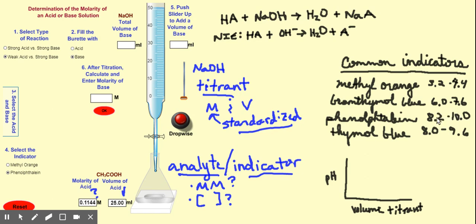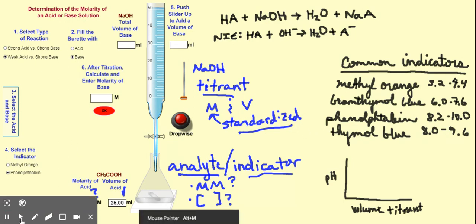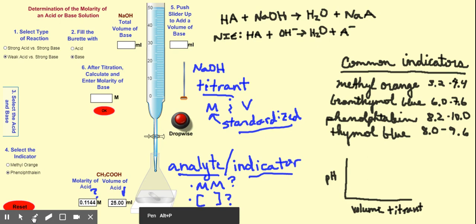Phenolphthalein changes color in the pH range of 8.2 to 10, which is a basic range. As the solution becomes more and more basic because we're adding base and the indicator is present, once it gets into that pH range we'll see a color change. When we see that color change — if we've chosen the correct indicator — it happens at something we call an endpoint. The endpoint is when you have a color change for your indicator.